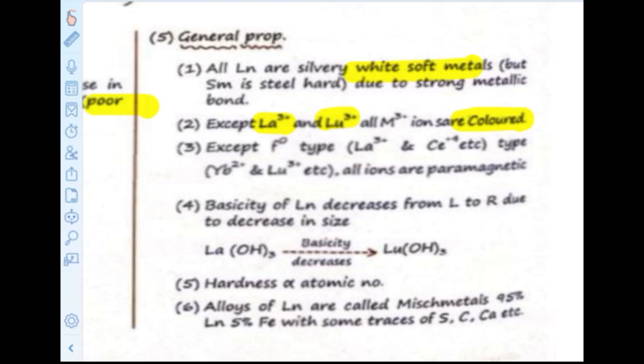Then comes whether lanthanoids are diamagnetic or paramagnetic. Most of them are paramagnetic. There are four exceptions that are diamagnetic: La³⁺, Ce⁴⁺, Yb²⁺, and Lu³⁺. You have to memorize these four names because this is again a direct theoretical question.